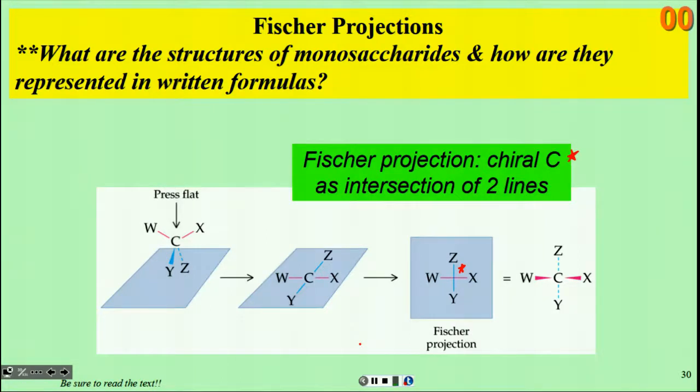The molecule at the left has W, X, Y, Z as the four unique groups, four distinct groups on that chiral carbon. If you think about looking at this diagram from above it, where the arrow is, W and X are coming towards you, and Y and Z are going away from you. Think about laying it flat, pressing it flat on a plane of paper. That's what the next diagram is. The Y and Z are vertical in your diagram, and the W and X are horizontal. We rotate this over so that Y and Z are on the vertical bonds and W and X are on the horizontal bonds.